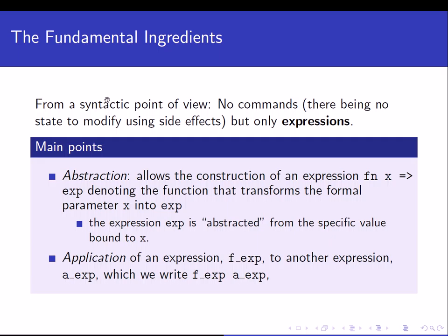Looking at the fundamental ingredients in a functional programming language: from a syntactic point of view, there are no commands, because there is no state to modify — there are only expressions. We have two kinds. First, abstraction: this allows construction of an expression fn x → exp, which denotes a function that transforms the formal parameter x into the expression exp. The expression is abstracted from the specific value of x — this is what lambda calculus calls lambda abstraction.